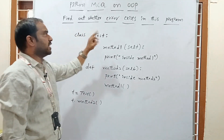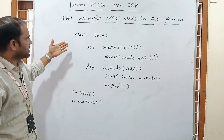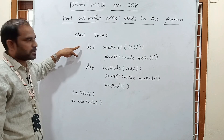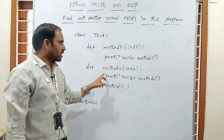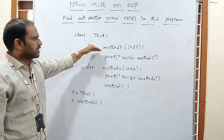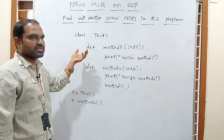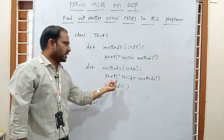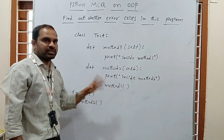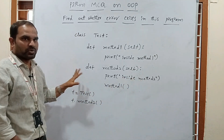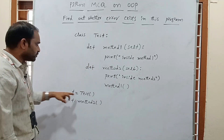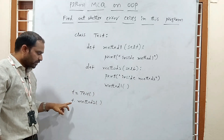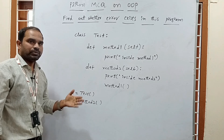Next question: find out whether an error exists in this program or not. We have created a class 'test' with two methods: method_one and method_two. Inside method_one, there is a print statement 'inside method one'. Inside method_two, there is a print 'inside method two', and then it calls method_one. An object 't' is created and t.method_two() is called. Analyze whether an error arises.